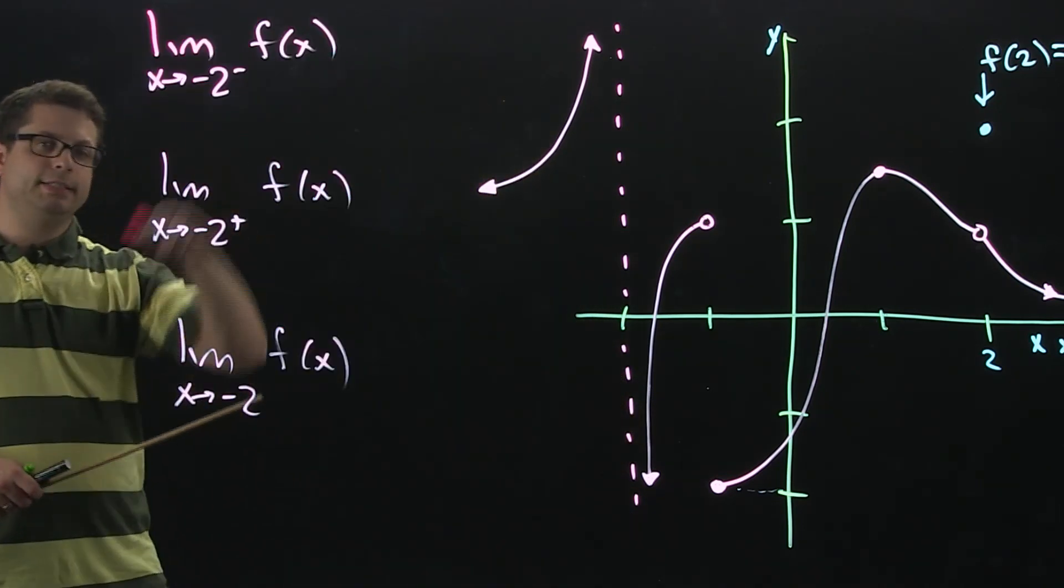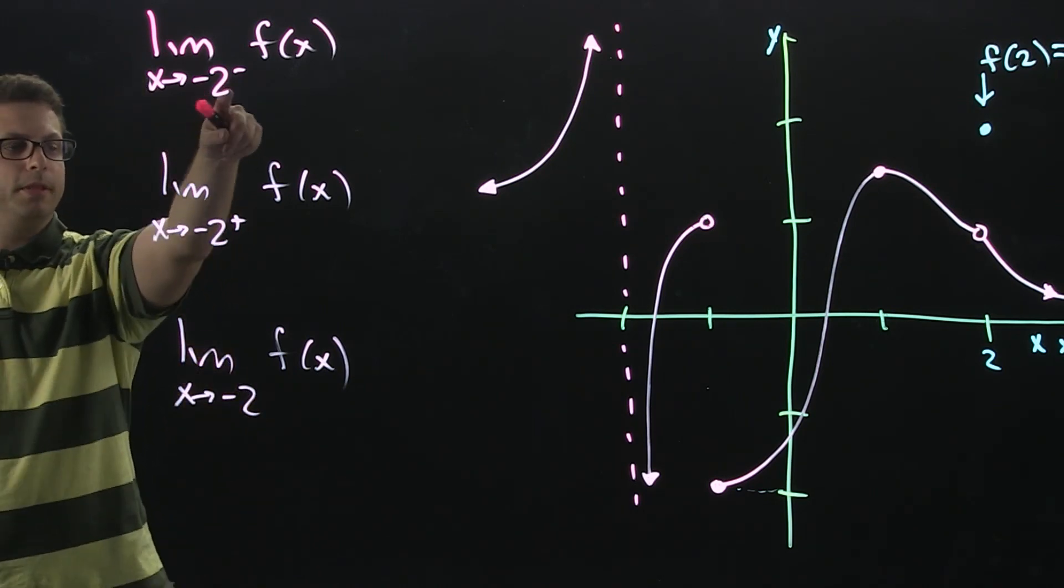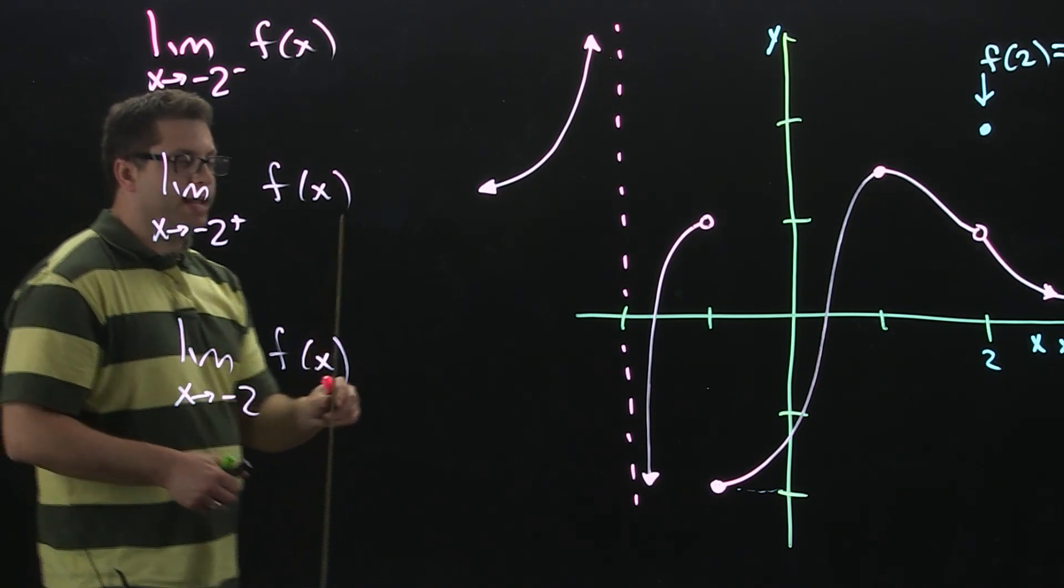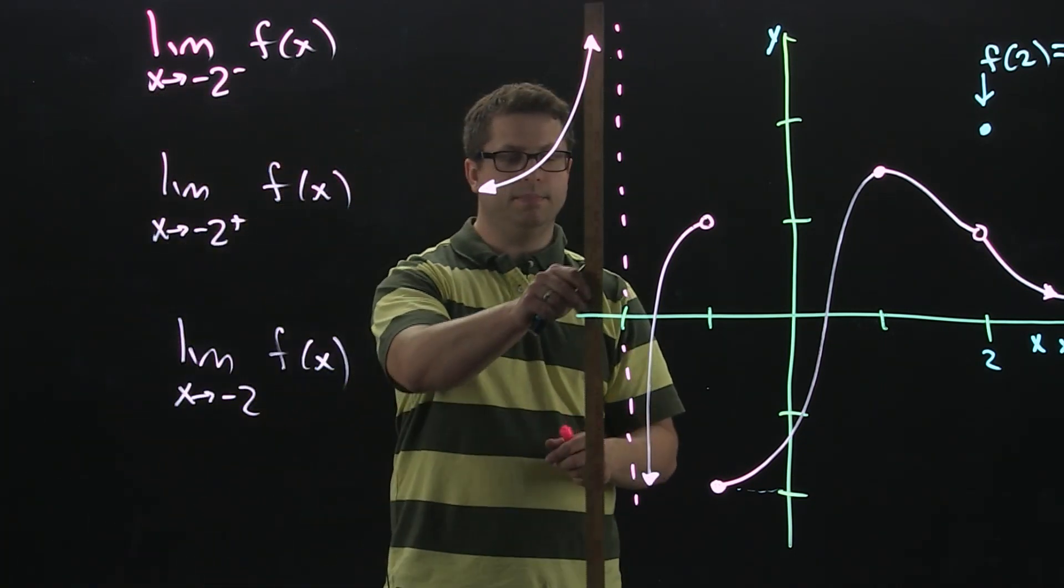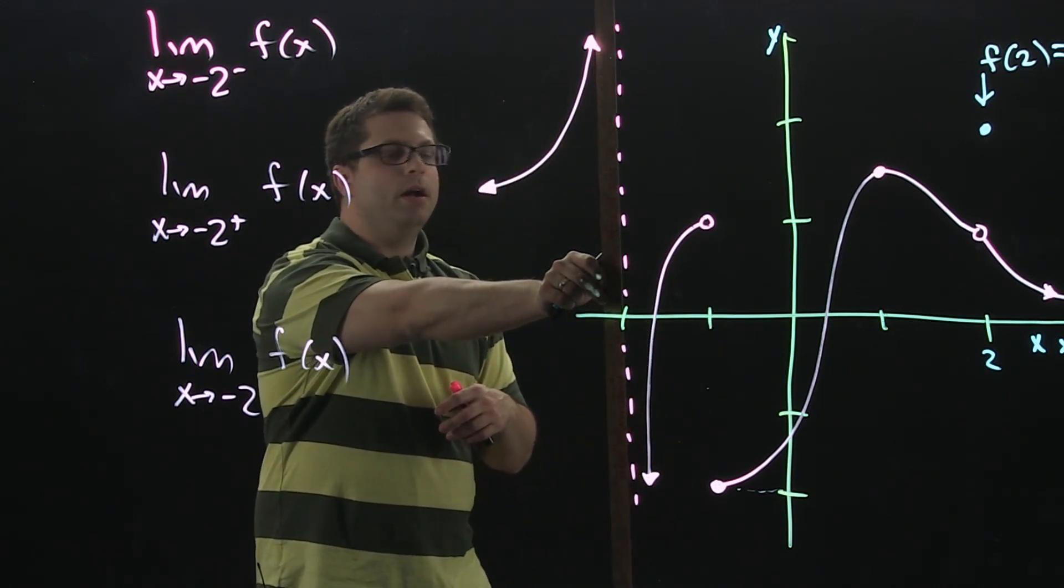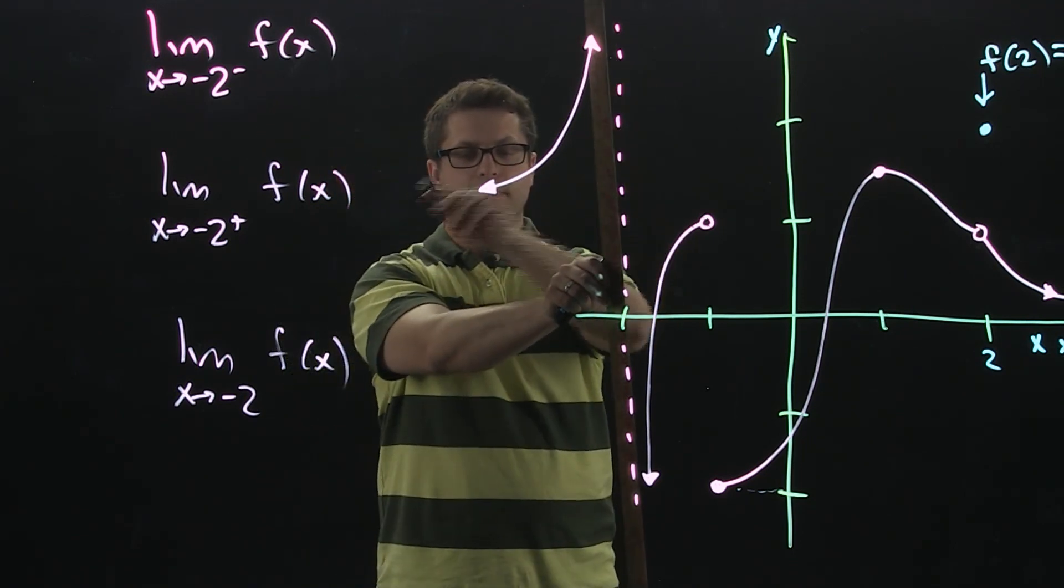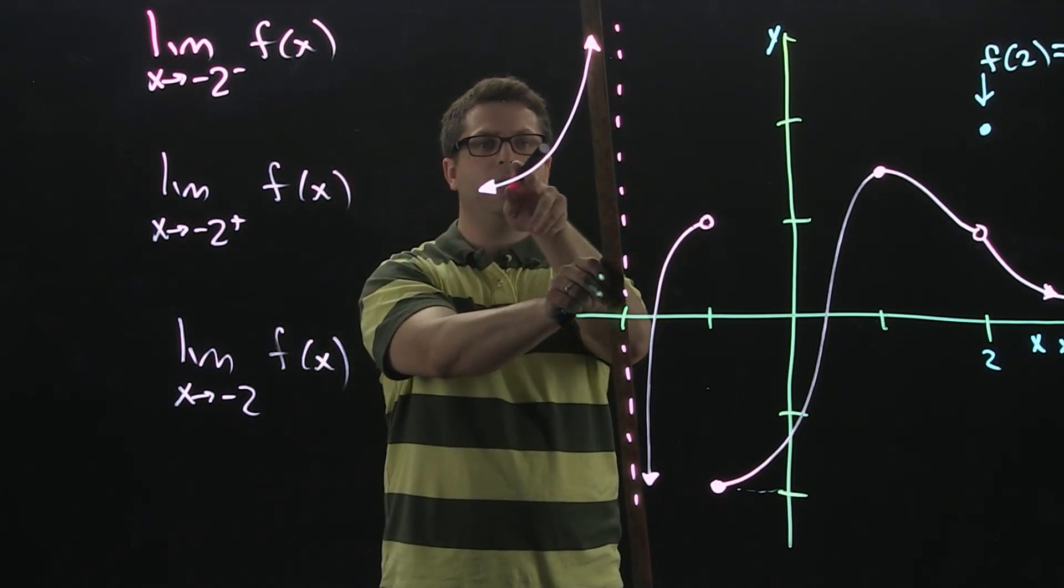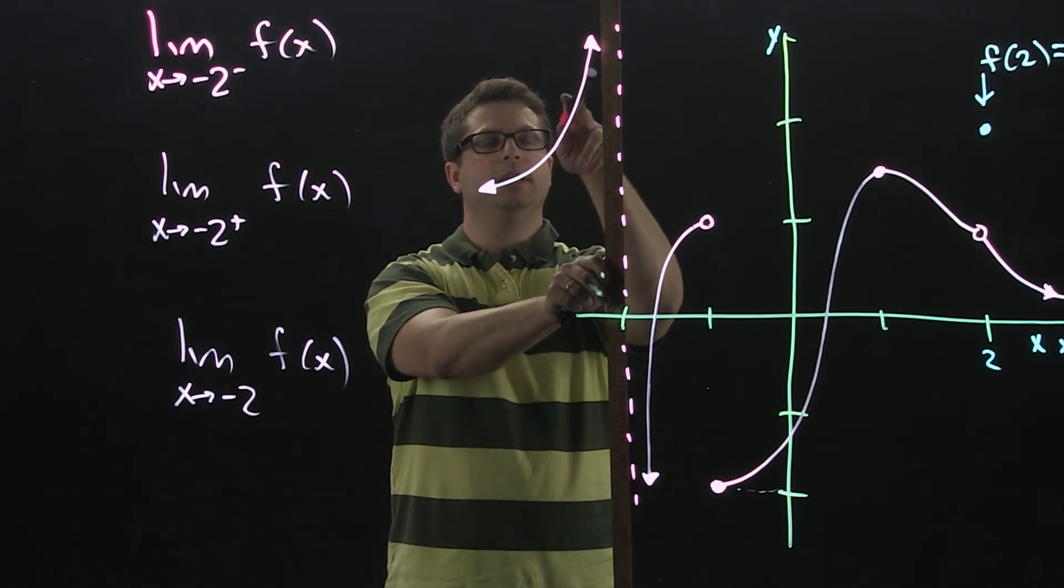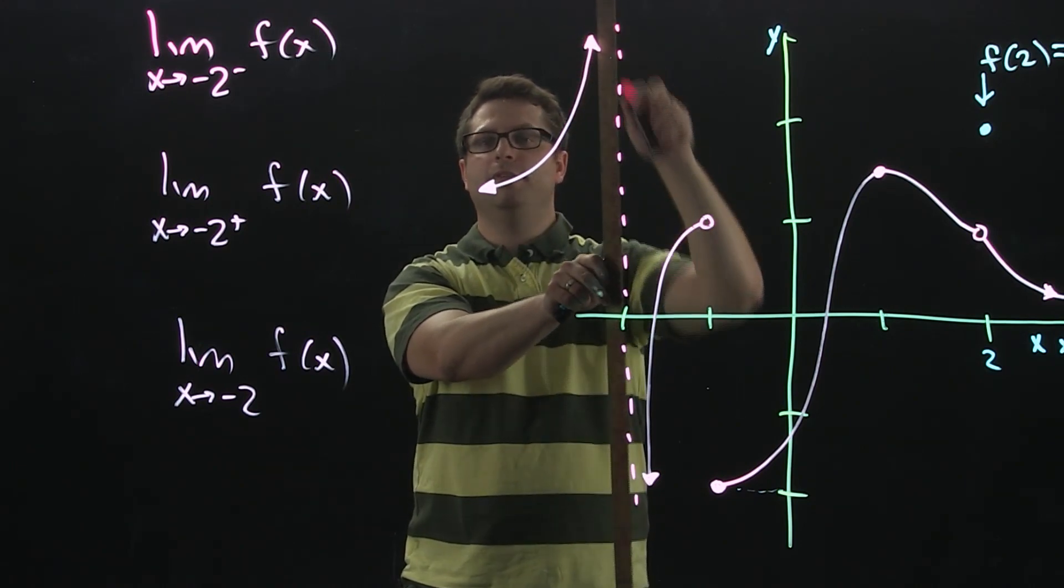Okay, let's keep going. In the next set of limits, we're going to be talking about what happens when we approach negative 2 from the left, right, and the general limit. Now, at negative 2, I hope you see the big dotted line here, which indicates that there's a vertical asymptote. So, approaching negative 2 from the left, I'm coming from this side, going up, and because it's a vertical asymptote, as I approach it, it's going to keep going up forever. And so, we'd indicate that as infinity.